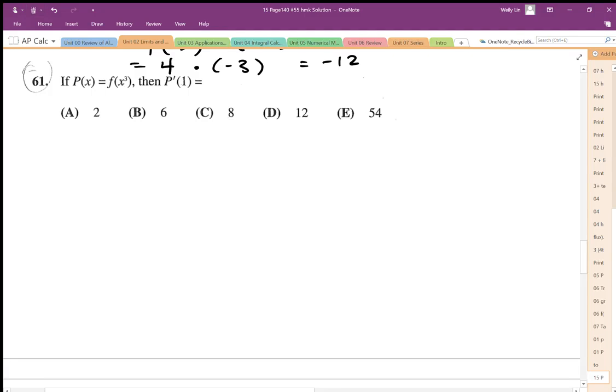For problem 61, we have an embedded function f of x cubed. So if I'm going to differentiate P, I differentiate the outside first and multiply it by the derivative of the inside function, which is 3x squared. Then establishing the derivative at x equals 1, I have to work out 1 cubed first, which is just 1, and times it by 3 times 1 squared, and that's just going to be 3.